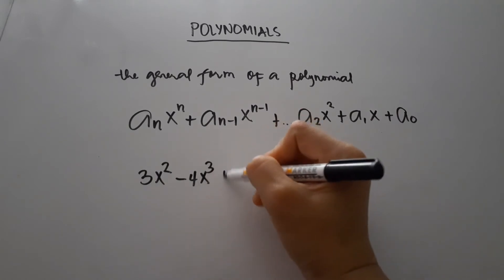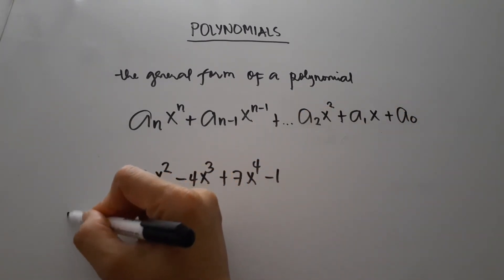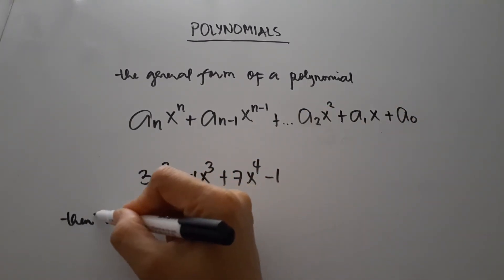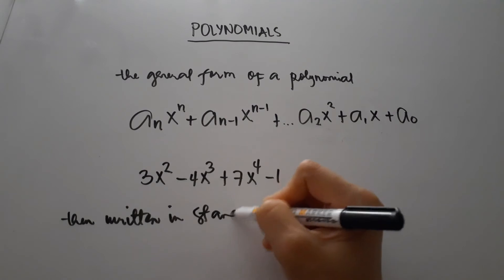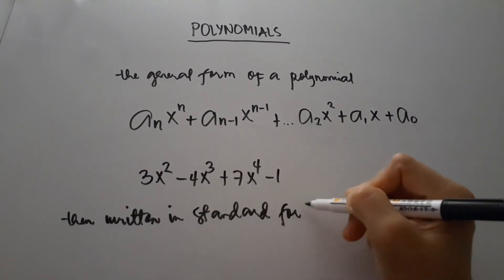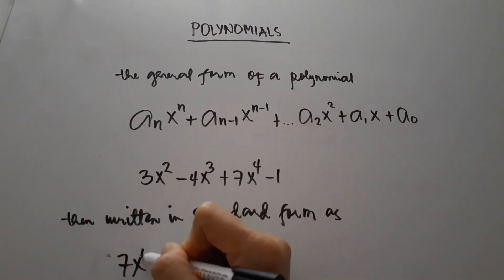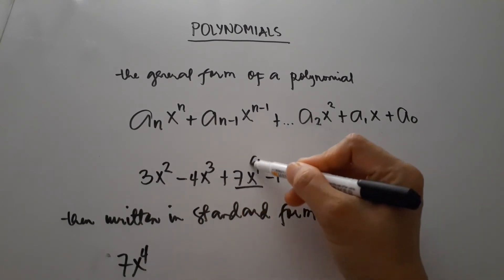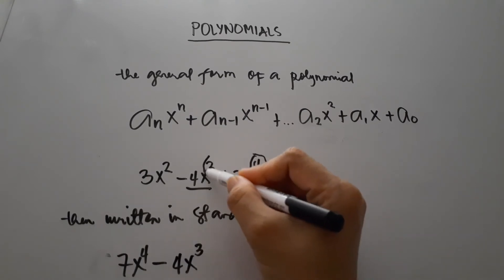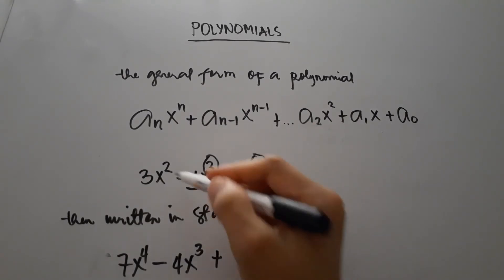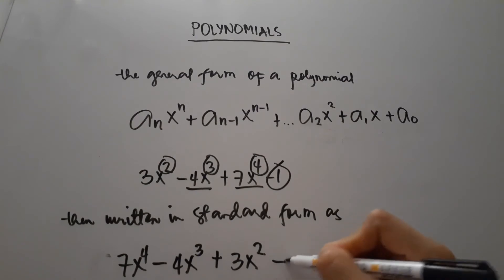For example, take 3x squared minus 4x cubed plus 7x to the fourth minus 1. Written in standard form, we arrange from the largest degree: 7x to the fourth has the leading coefficient of 7 and degree 4. So the standard form is 7x to the fourth minus 4x cubed plus 3x squared minus 1.